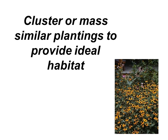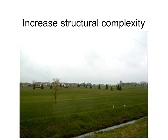Alternatively, we want to cluster or mass similar plantings to provide ideal habitat — plant continuity and continuity of food and cover resources. To me, this is also a more aesthetically pleasing approach with a more natural feel. Here's an example of what not to do — increase structural complexity, increase vertical structure, increase plant diversity. There is very limited food or cover resources for birds here. Turfgrass is just not ideal for birds because in its very nature, it lacks structure and plant diversity. There are a few species that will use turfgrass like robins, but generally it's not ideal.